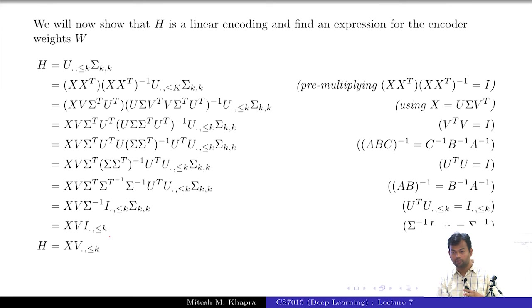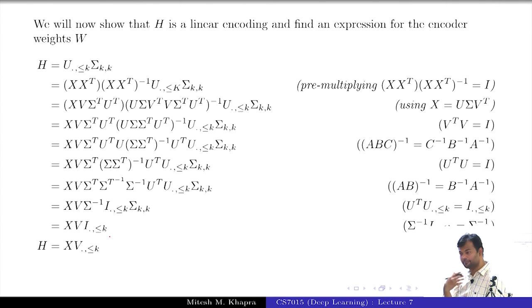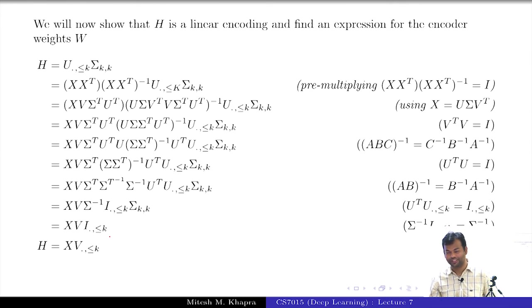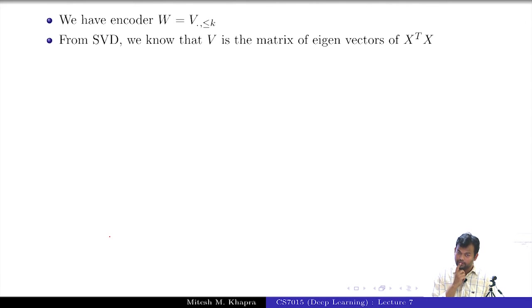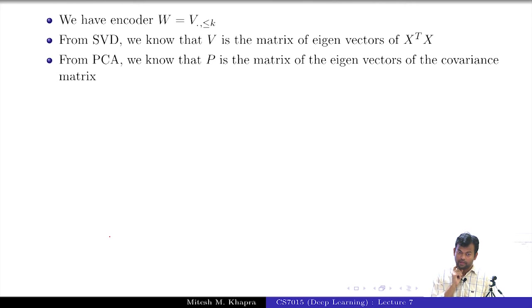So we have arrived at the desired form. H is a linear transformation of X, meaning my optimal encoder was a linear encoder. What was the optimal weight matrix W? The first k columns of V. So the encoder is equal to the first k columns of V. What is V? The eigenvectors of X-transpose X.